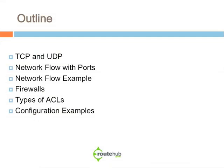So these are some of the things we're going to be talking about. We'll talk a little bit about TCP and UDP, talk about some of the network flows and provide some examples, and discuss some of the types of AccessList, including some configuration examples of those types.